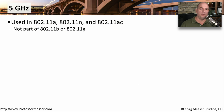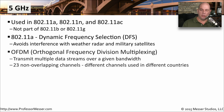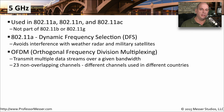Another section of frequencies available for our wireless networks are the 5 GHz frequencies. We see these being used for 802.11a, 802.11n, and 802.11ac. 5 GHz frequencies are not used for 802.11b or g. For 802.11a, we're using dynamic frequency selection to determine what frequencies to use. There are a number of military uses for these 5 GHz frequencies, so by using DFS, we're able to avoid conflicting with radar being used for weather or military satellite use. This uses the same OFDM modulation, and there are 23 non-overlapping channels available in this 5 GHz range.